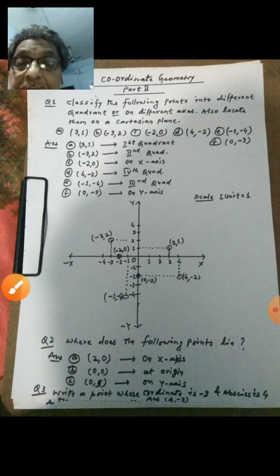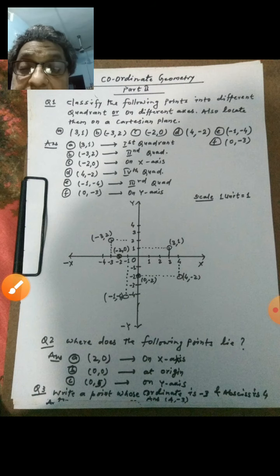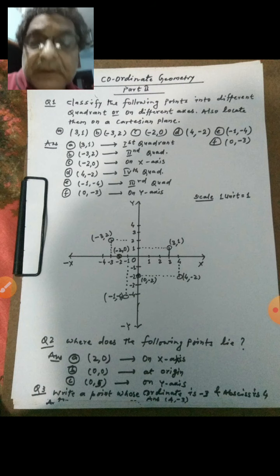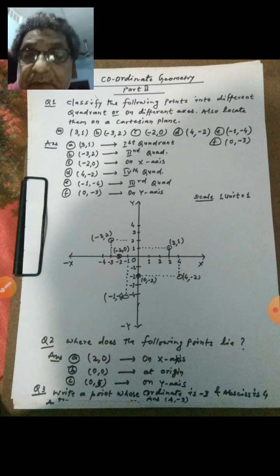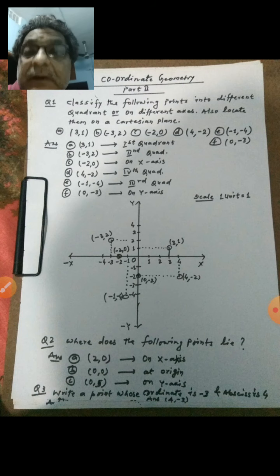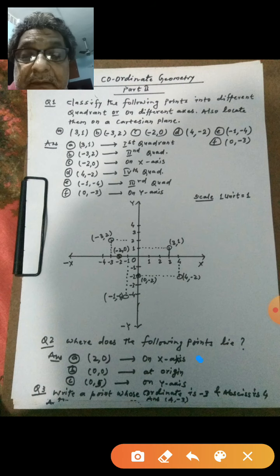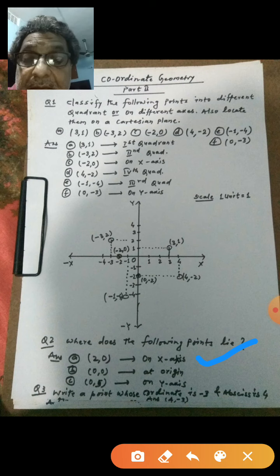Now come to second question: where does the following point lie? Simply we have to give the answer mentioning where it belongs. So first is 2 comma 0. Quite natural, no need I think again and again explaining. Y value is 0, so it will go on x-axis.